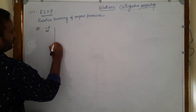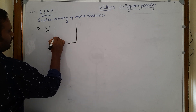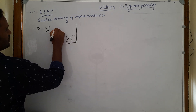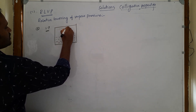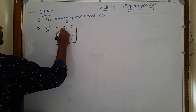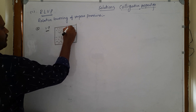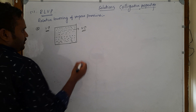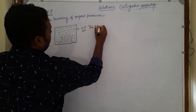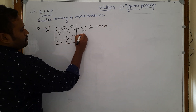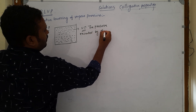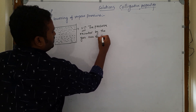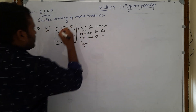Vapor pressure is as follows: when you take a volatile liquid — a volatile liquid is one which can easily evaporate and convert into gaseous state — these gas molecules exert some pressure. We already know air can exert pressure. The pressure exerted by the gas over its liquid is called vapor pressure.